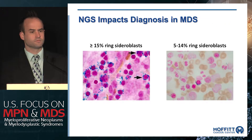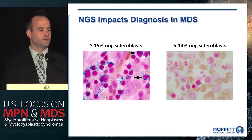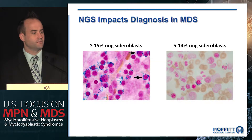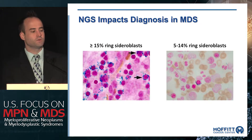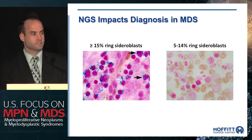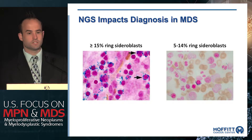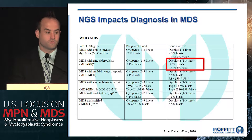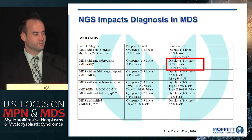Up until the recent revision of the WHO classification, sequencing was not incorporated into MDS diagnosis, but that has changed. Greater than 15% ring sideroblasts previously yielded a diagnosis of RARS, whereas patients with less than 15% ring sideroblasts were classified as ICUS. Now, if they carry an SF3B1 mutation, they are classified as having ring sideroblasts. The 2016 update specifies that if you have greater than 5% ring sideroblasts with an SF3B1 mutation, you are classified as MDS with ring sideroblasts.